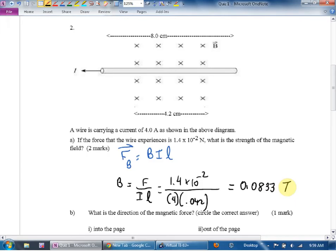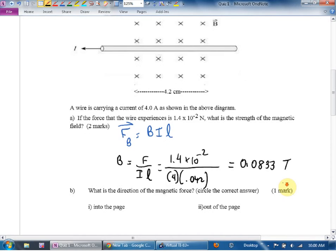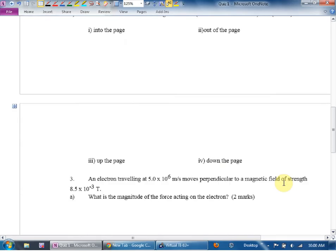0.0833 teslas or 8.3 times 10 to negative 2 teslas. Seems reasonable. What's a big magnetic field in teslas, like 50 or 100? If you get an answer of 2,000 teslas I doubt it. What's the direction of the magnetic force? Okay, thumb in the direction of the current which for me is to my left, that's to your right, fingers into the page, down the page. Hopefully you figured out that there was a part two on the back, sorry I couldn't fit it all on one page.